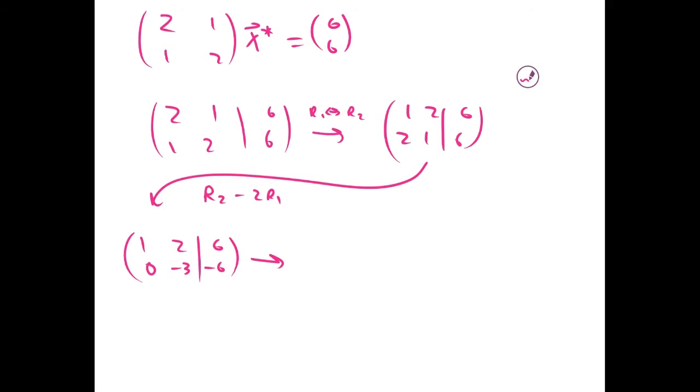And this will give us, if we multiply R2 by negative 1/3, we get 1, 2, 6, 0, 1, 2.